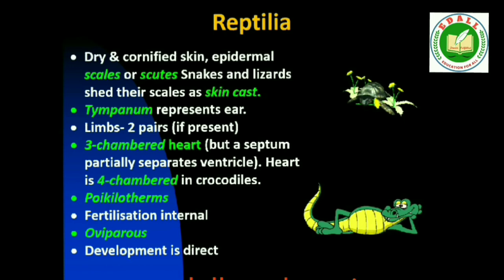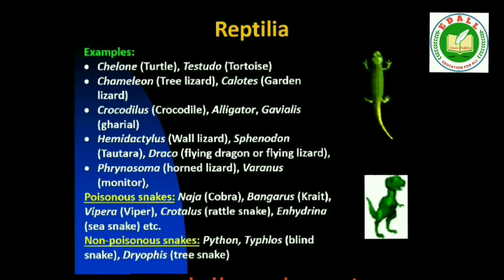Fifth is Class Reptilia. The class name refers to their creeping or crawling mode of locomotion (Latin: repere/reptum — to creep or crawl). They are mostly terrestrial animals and their body is covered by dry and cornified skin, epidermal scales or scutes. They do not have external ear openings. Tympanum represents the ear. Limbs, when present, are two pairs. Heart is usually three-chambered, but four-chambered in crocodiles. Reptiles are poikilotherms. Snakes and lizards shed their scales as skin cast. Sexes are separate. Fertilization is internal. They are oviparous and development is direct. Examples: Chelone (turtle), Testudo (tortoise), Chameleon (tree lizard), Calotes (garden lizard), Crocodilus (crocodile), Alligator, Hemidactylus (wall lizard). Poisonous snakes: Naja (cobra), Bangarus (krait), Vipera (viper).